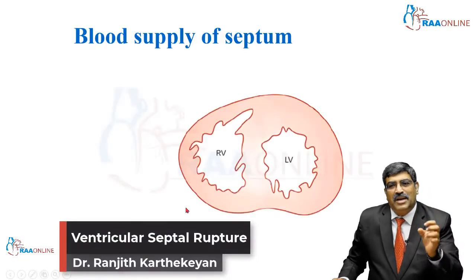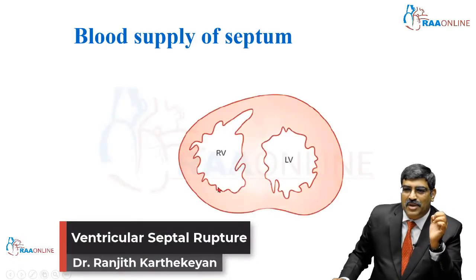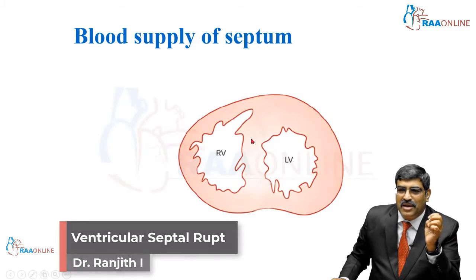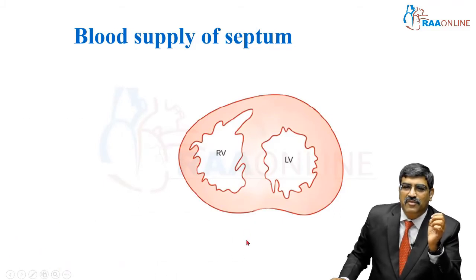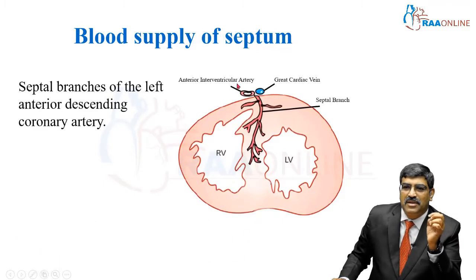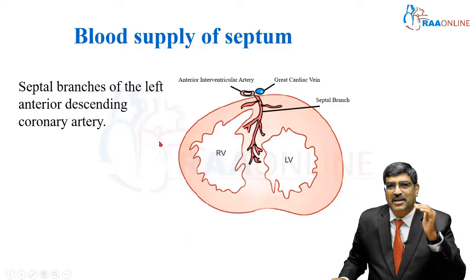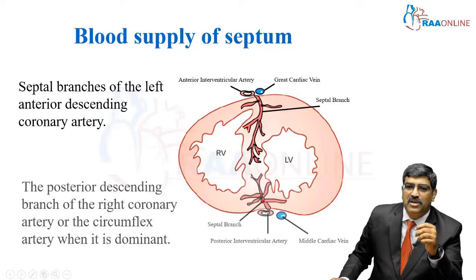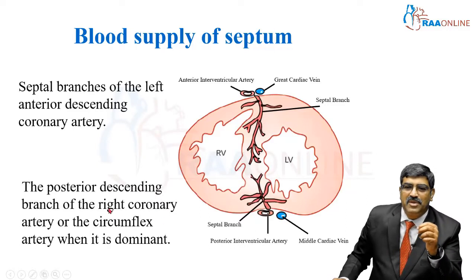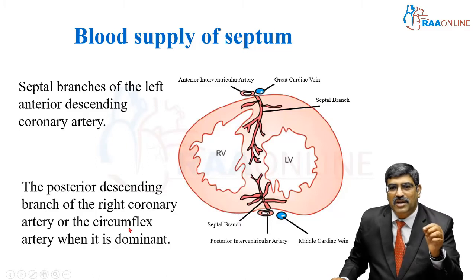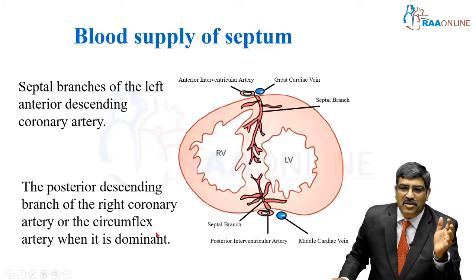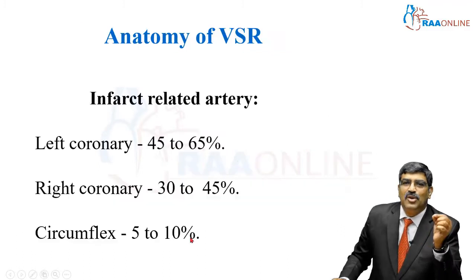Coming to the blood supply of the septum — this is the left ventricle, this is the right ventricle. The anterior two-thirds of the septum is supplied by the left anterior descending artery, and the posterior one-third of the septum is supplied by the right coronary artery or the circumflex artery, whichever is dominant — usually it is the right coronary artery.